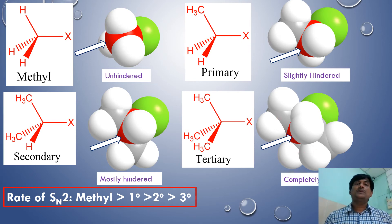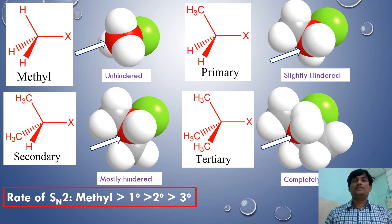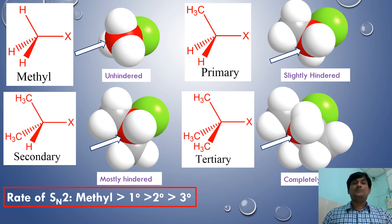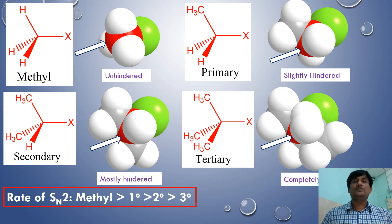Therefore, for SN2 reactions, the reactivity order is: methyl halides > primary > secondary > tertiary. Tertiary alkyl halides generally do not participate in SN2 type of reactions due to complete steric blocking of the reaction center.